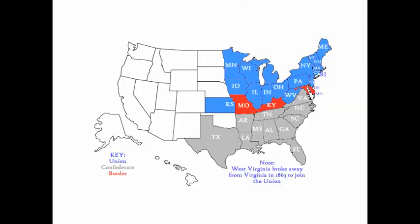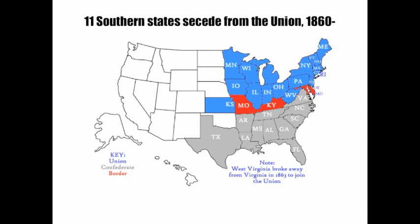Let's take a look at the American Civil War as it started. Initially, 11 Southern states seceded from the Union just after Abraham Lincoln was elected president in 1860. But notice on the map, there were four slave states that chose not to secede. These are called border states: Missouri, Kentucky, Delaware, and Maryland. Later, they would be joined by West Virginia, a section of old Virginia that seceded from the seceded state of Virginia. These slave-holding states stayed in the Union.